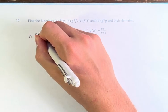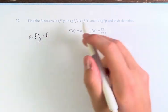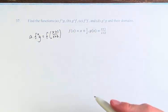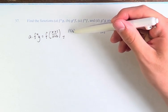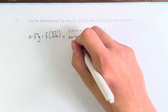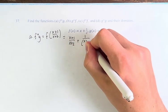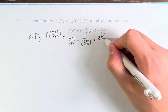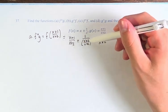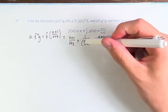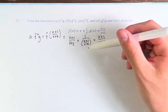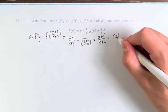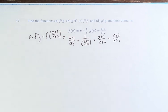Our first function, f of g, is f of g of x, so f of (x plus 1 over x plus 2). Therefore, we have to plug x plus 1 over x plus 2 into f of x wherever we see an x. So this is (x plus 1 over x plus 2) plus 1 over (x plus 1 over x plus 2). We have a fraction here, so instead of dividing by it, we can multiply by its reciprocal — plus 1 times x plus 2 over x plus 1. And this is f of g.